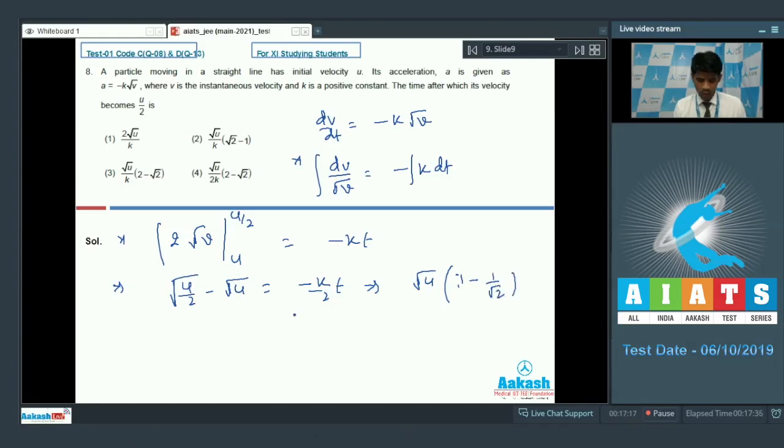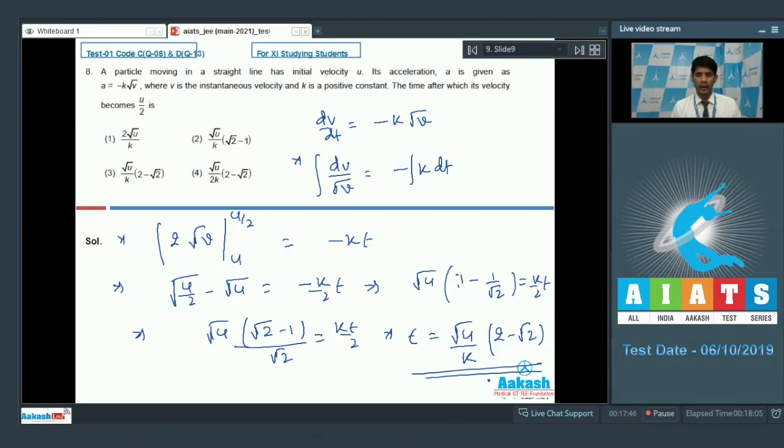Or root u, root 2 minus 1 by root 2, must be equal to kt by 2, or t equal to root u divide by k into 2 minus root 2. This is the final answer for the time here. So looking on to the options here for question number 8, answer option 3 is the correct answer.